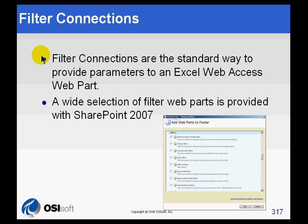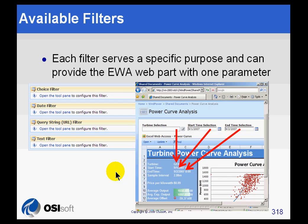We saw one way of providing parameters. Here is a different way of providing parameters — and a whole variety of parameters that you might choose to pass to this Excel Web Access Web Part. There is a whole slew of filters available in SharePoint 2007, and I will show you where that list is going to come up.